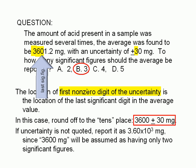If we were to quote just the average value and leave out the uncertainty, we cannot simply report it as 3,600 milligrams. Without the uncertainty, people would assume that the trailing zeros are not significant and that there are only two significant figures, the 3 and the 6.